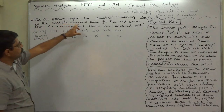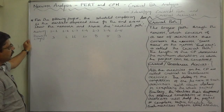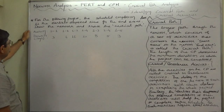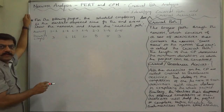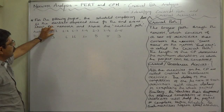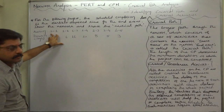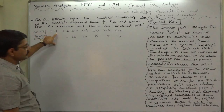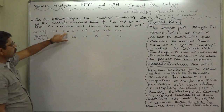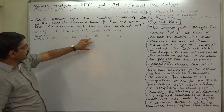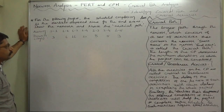The project given to us: for the following project, the scheduled completion date is the earliest expected time for the end event. Draw the network and trace the critical path. The activities have been given with reference to node numbers. The first activity is from node 0 to 1, where 0 is the start event. From node 1, three different successor activities start: 1 to 2, 1 to 3, and 1 to 4. Further activities are from node 2 to 3, 3 to 4, and 4 to 5, with durations given in days.